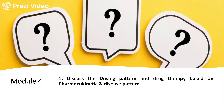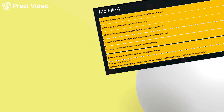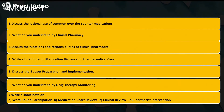Now I am going to start Module 4. In Module 4, you should know how to discuss the dosing pattern and drug therapy based on pharmacokinetics and disease pattern. Other relevant questions from Module 4 are: Discuss the rational use of common OTCs. What do you understand by clinical pharmacy? Discuss the functions and responsibilities of clinical pharmacist. Write a brief note on medication history and pharmaceutical care.